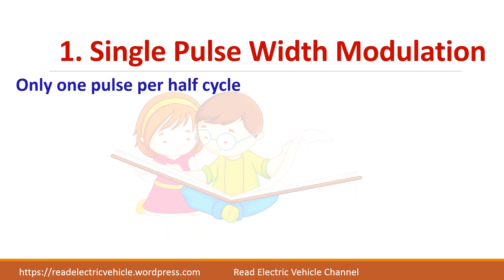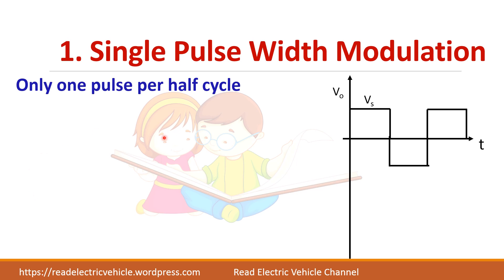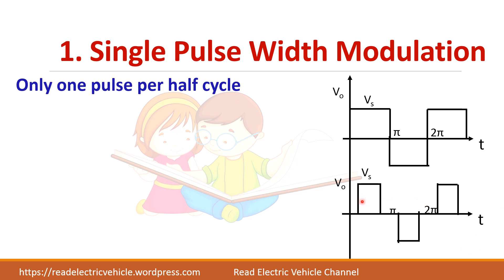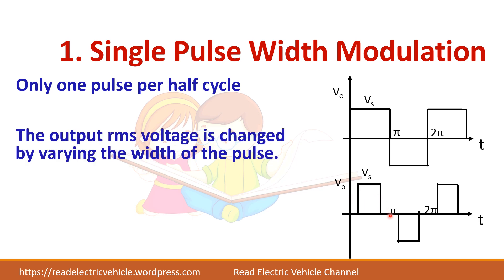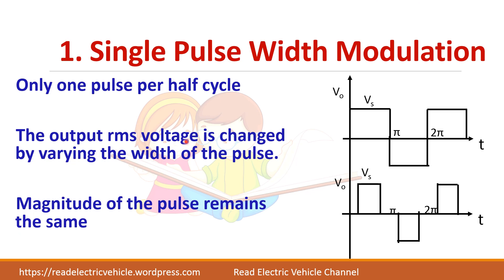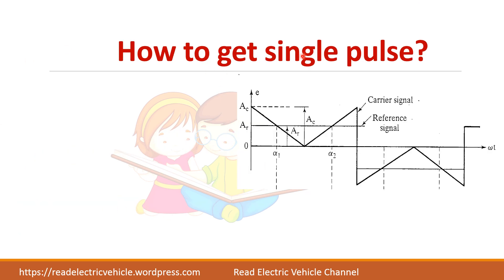In single pulse width modulation there is only one pulse per half cycle. The width of the pulse is changed to vary the RMS voltage. The magnitude of the pulse remains the same — only the width is changed — so the total RMS value changes.